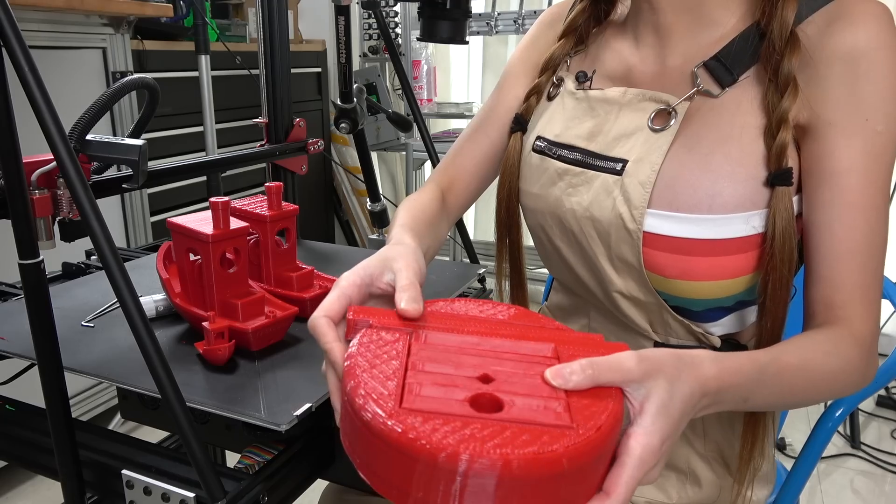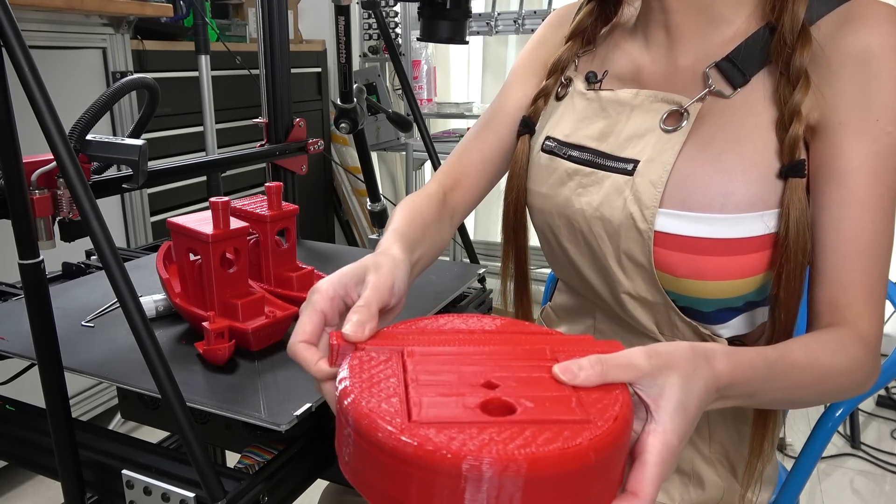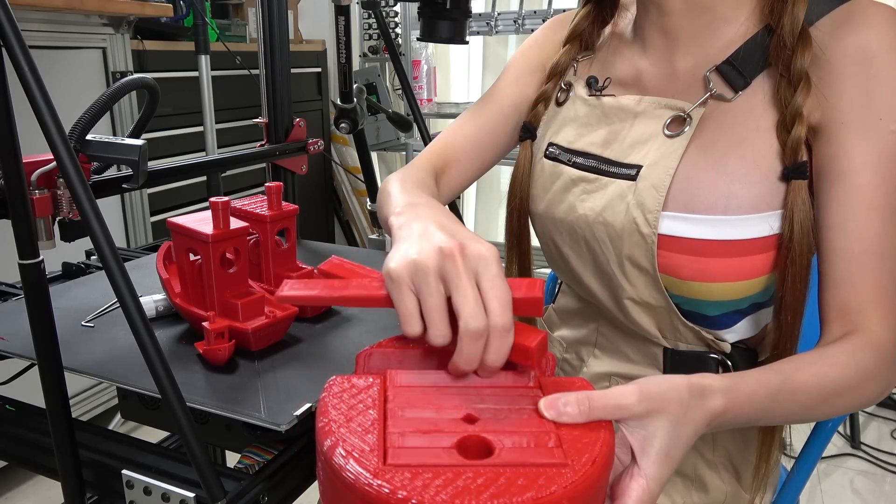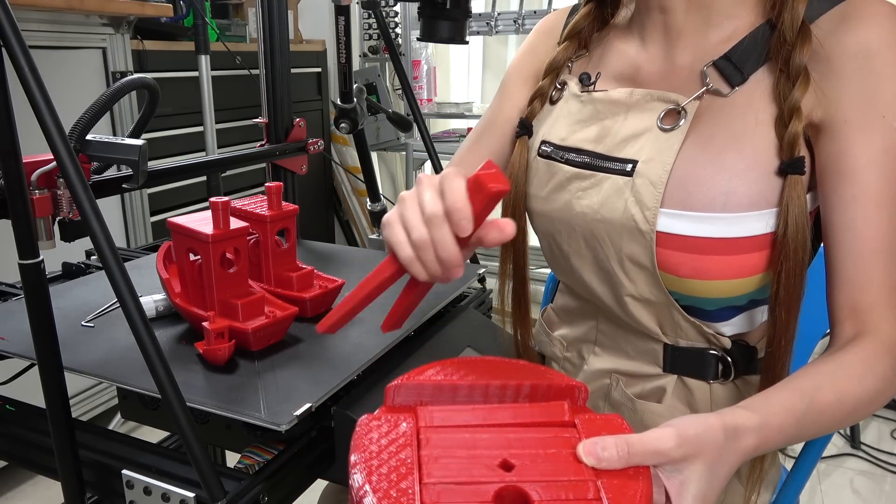Here's a small work holding vise, 100% 3D printed. It's based on a traditional Chinese design we use for carving stamps. I'll put the STL in the description.